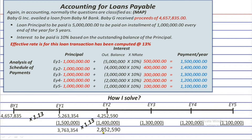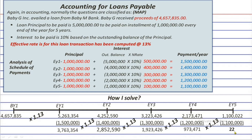Continuing the timeline: 2,852,590 × 1.13 = 3,223,426; minus 1,300,000 gives a carrying value. Then × 1.13 = next value; minus 1,200,000 gives 973,471. Then 973,471 × 1.13 = 1,100,022; minus 1,100,000 leaves a remainder of 22 instead of zero.